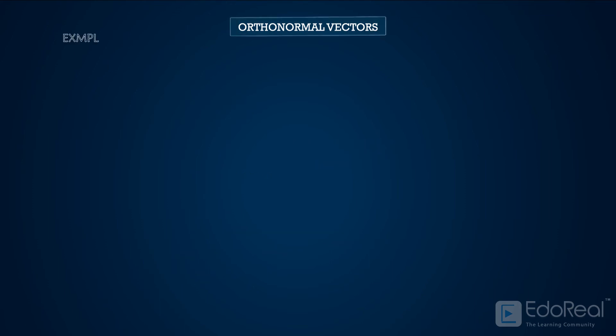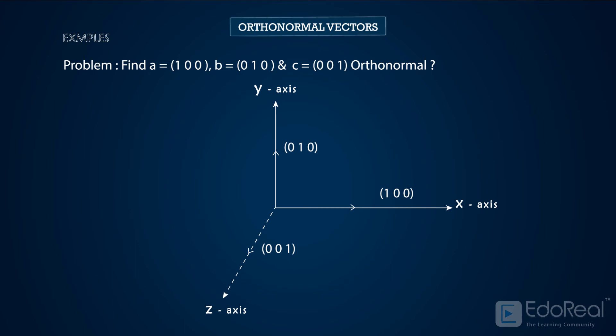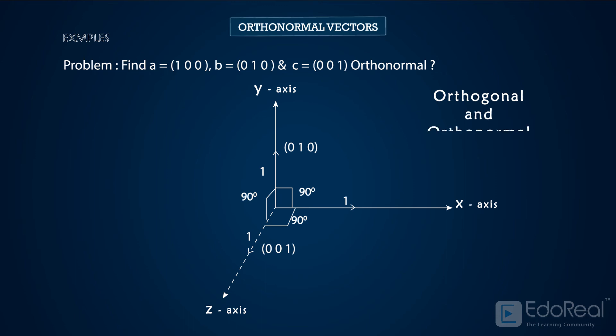Let us now discuss some examples. Find if the vectors A, B, and C are orthonormal vectors or not. As the given vectors are along the X, Y, and Z axis respectively, the angle between any two vectors is 90 degrees. So we can say that the given vectors are orthogonal to each other. Also, the length along each axis is one for all three vectors. So we can say that the given vectors are orthonormal vectors.